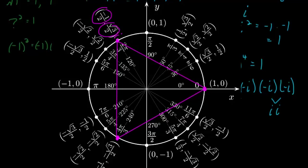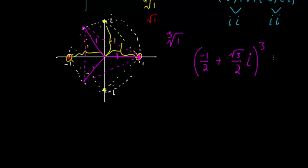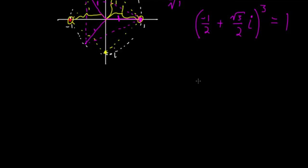Coming back to the graph, the coordinate of that point is: negative one-half (the real component, which is cosine of 2π/3) plus square root of 3 over 2 times i (the imaginary component, which is sine of 2π/3). So this number cubed should equal one — if our guess is correct. It looks complicated, but I'm going to cube it and show you that it really does equal one.